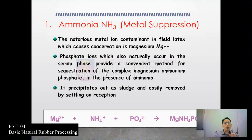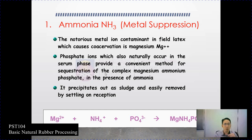Ammonia also acts as a metal suppressor. There are two functions of the anticoagulant: first is bactericide and neutralizing acid, and second is metal suppression. In the ammonia system, it has both properties. The notorious metal iron contaminant in field latex which causes coagulation is magnesium phosphate iron, which naturally occurs in the serum phase. In the presence of ammonia, it precipitates out as a sludge and is easily removed by settling on reception — producing magnesium ammonium phosphate which settles at the bottom.